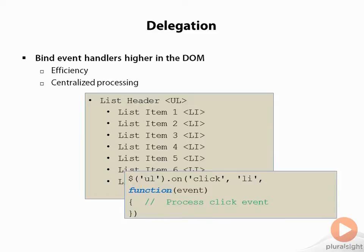In this example, a click event on a list item only bubbles up one layer. In complicated web pages, there may be many layers between the element that triggers the event, called the target element, and the element that actually processes the event. Target elements that are extremely deep in the DOM in relation to the delegated element can cause perceptible delays in event handling. When creating a complex page, it's important to determine how many elements will likely have event handlers attached and how deep they will reside in the DOM. Using the selector syntax such as this one, we can specify just how many layers the event will be bubbled up before we process it. These decisions should be part of the design process and help us create a structure that will support efficient event processing.